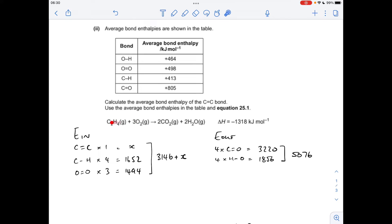So for the reactants, we've got to break one mole of C=C double bonds, that's our unknown. Four moles of C-H bonds, that'll equate to that many kilojoules per mole. Three moles of O=O double bonds, so that's that. So the total in is 3146 plus the unknown X.